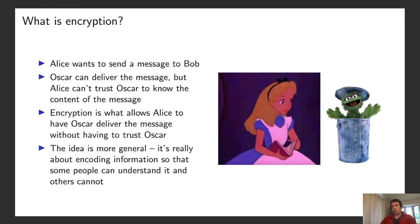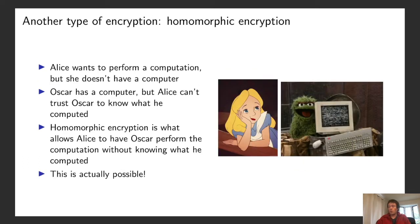Encryption is a tool that allows Alice to have Oscar deliver the message without having to trust Oscar to know what the message says. The idea is actually a little bit more general — it's really about encoding information so that some people can understand it and others cannot. Homomorphic encryption is another form of encryption, but it's more about performing computations rather than sending messages.